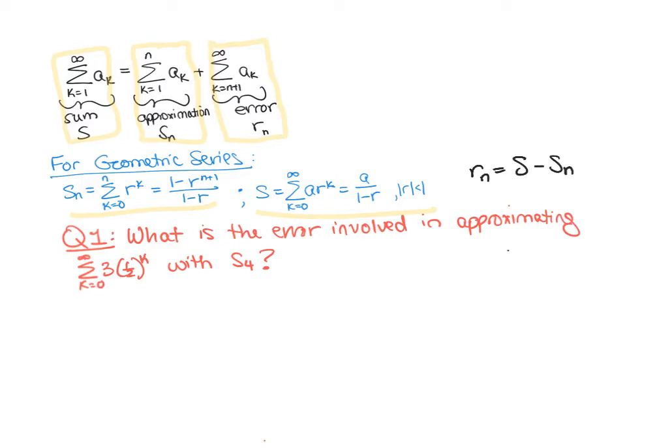If we want to find this error, we want to find the sum S, the exact value, and then we want to find S sub four and then subtract them. The exact value S using the formulas given above is given by a, which in this case is three, divided by one minus r, and r in this case is one half, so this is going to be six. S of four is given by a again times one minus one half to the four plus one divided by one minus one half.